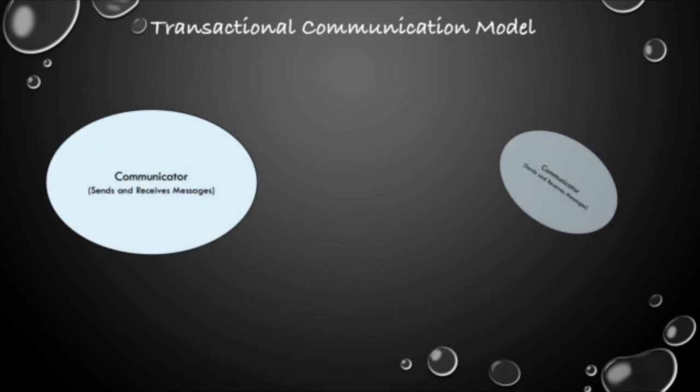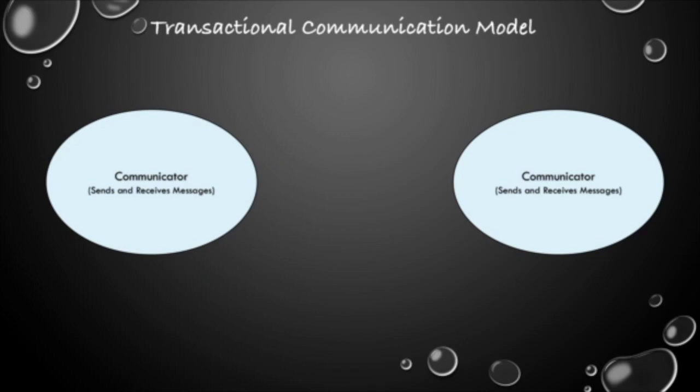The first two pieces are the communicators. In the transactional communication model, both people are communicating simultaneously. So at identical times, each communicator is both sending and receiving messages. It isn't a one-way path. You don't send a message, they receive it, and then they interpret it and return it. It doesn't work that way. We are constantly sending and receiving messages.